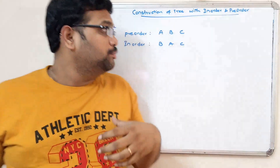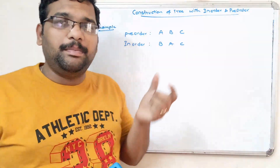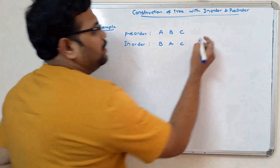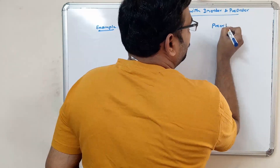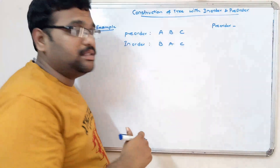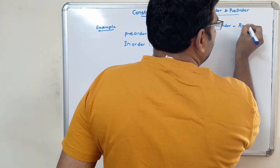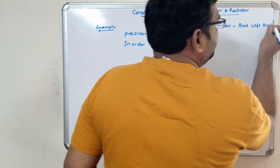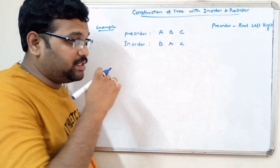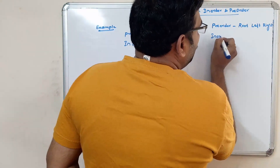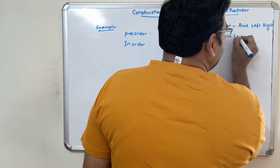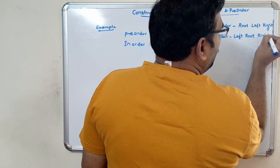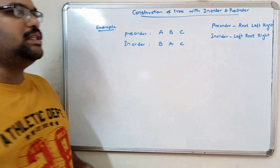These are the inputs we are given, and based on these inputs we have to construct a tree. In pre-order traversal, we first visit the root, then left, then right. In in-order traversal, we first visit the left node, then the root node, then the right node.